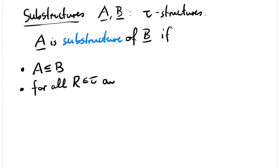Second, for every relation symbol R in the signature tau, a tuple A over capital A is contained in the relation R of the structure A if and only if it is contained in the relation R of the structure B.